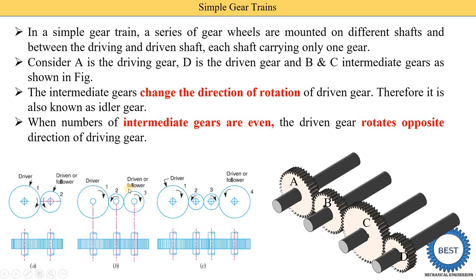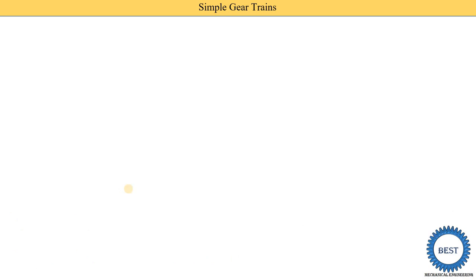In MCQ exams, questions are asked to find the direction of rotation of gears. We simply count the idler gears — whether the total count is odd or even — and can directly state whether the driver and driven gears rotate in the same or opposite directions. Now we will find out the velocity ratio of a simple gear train.